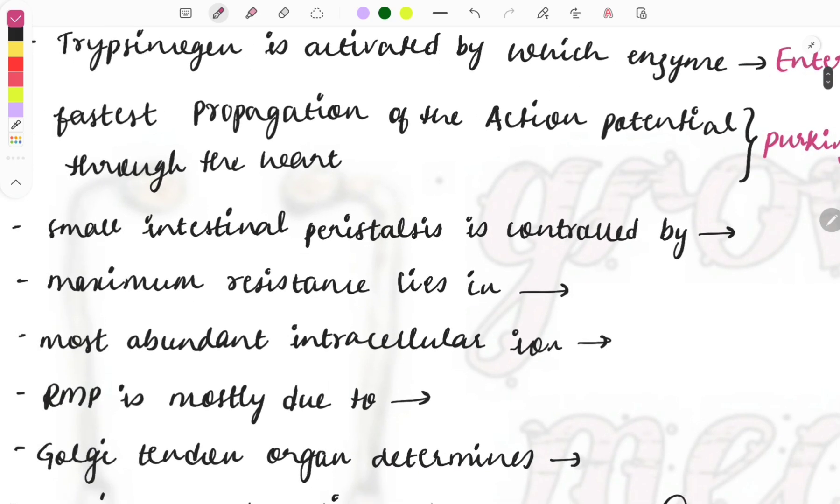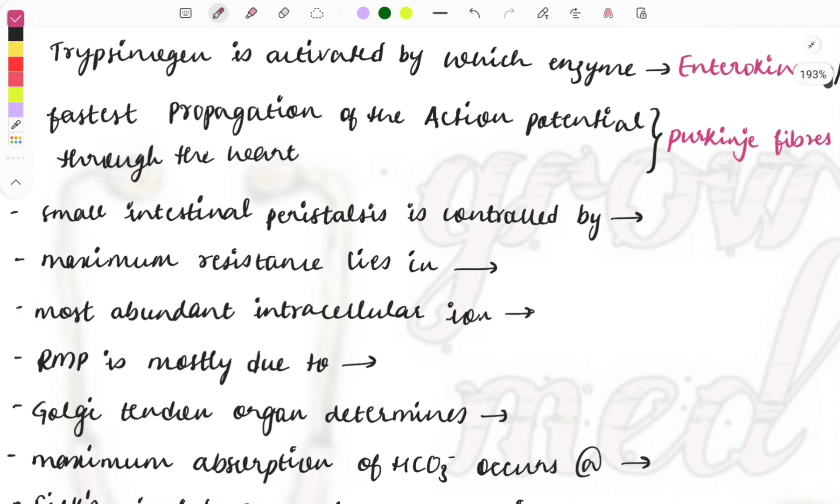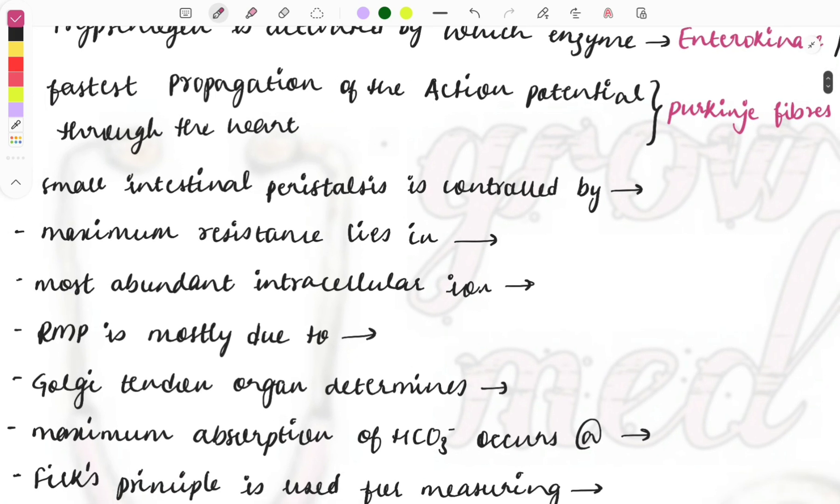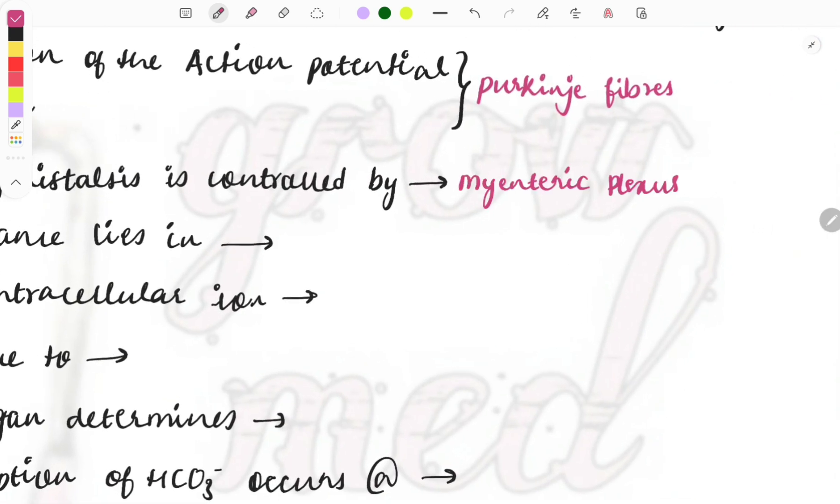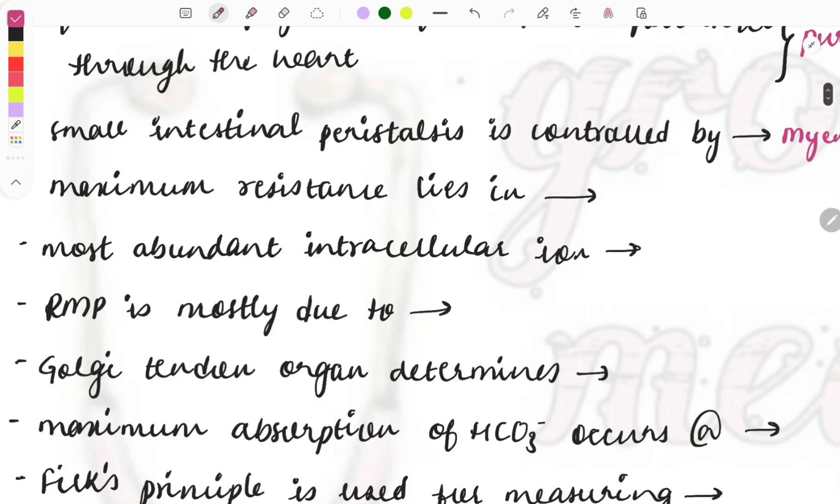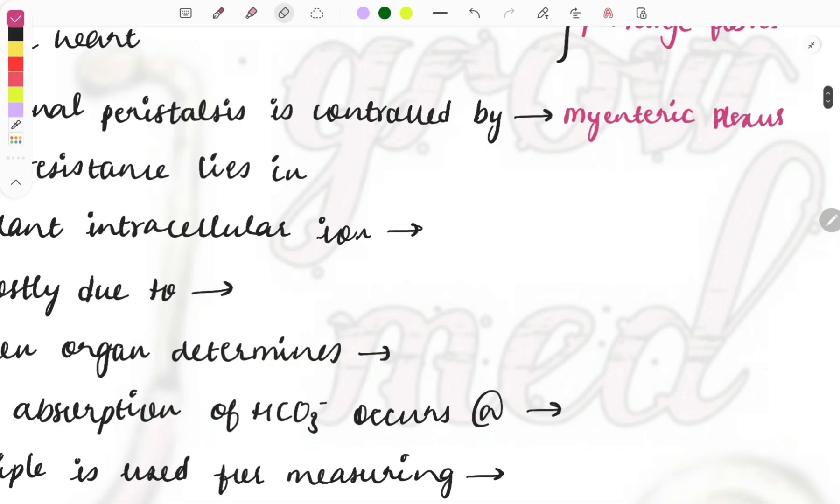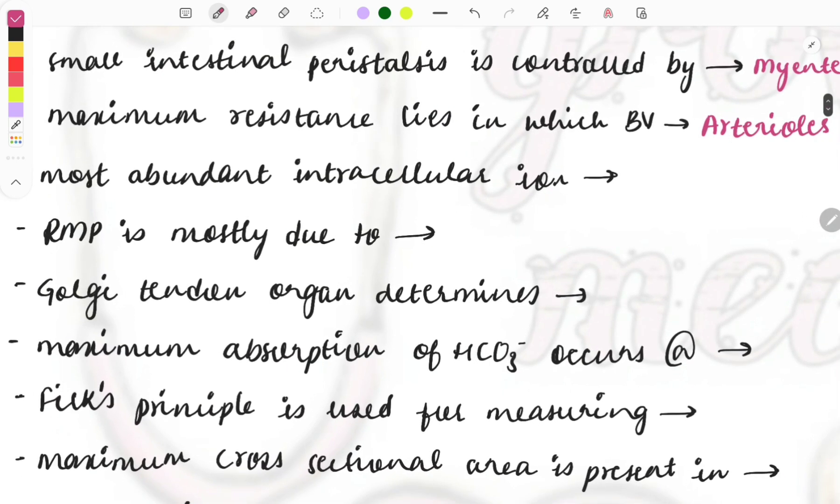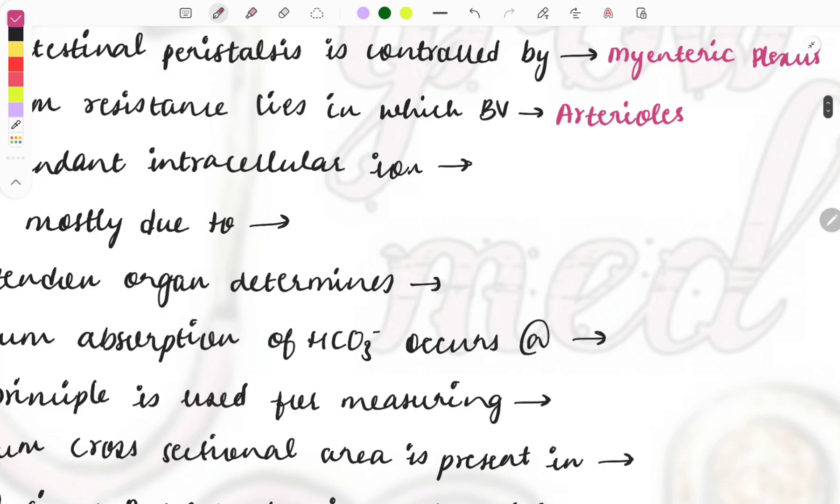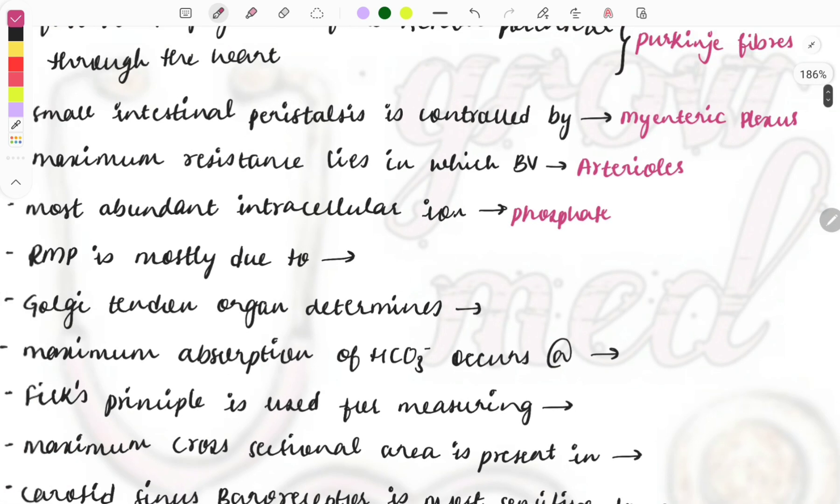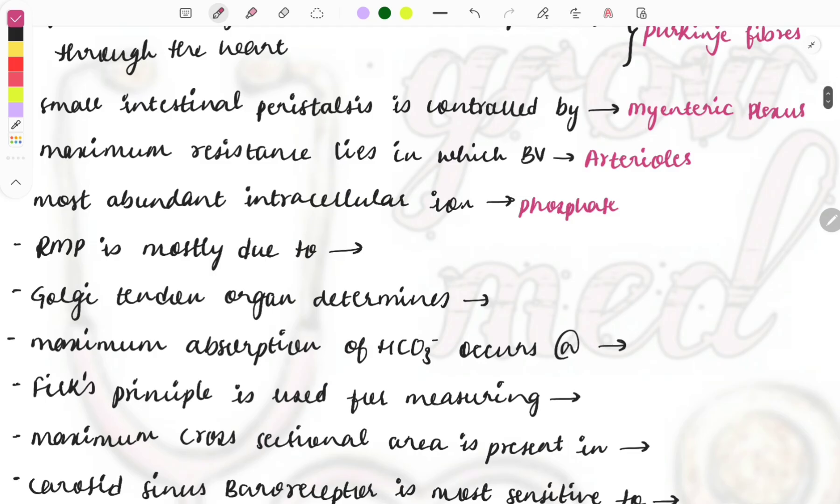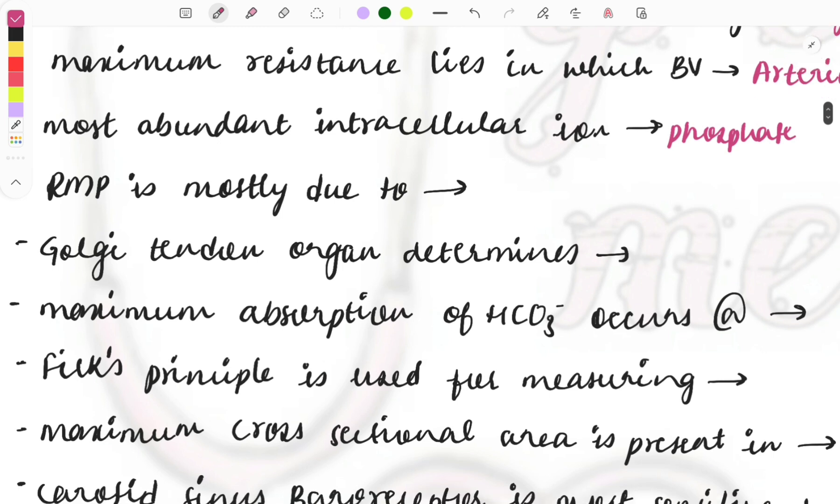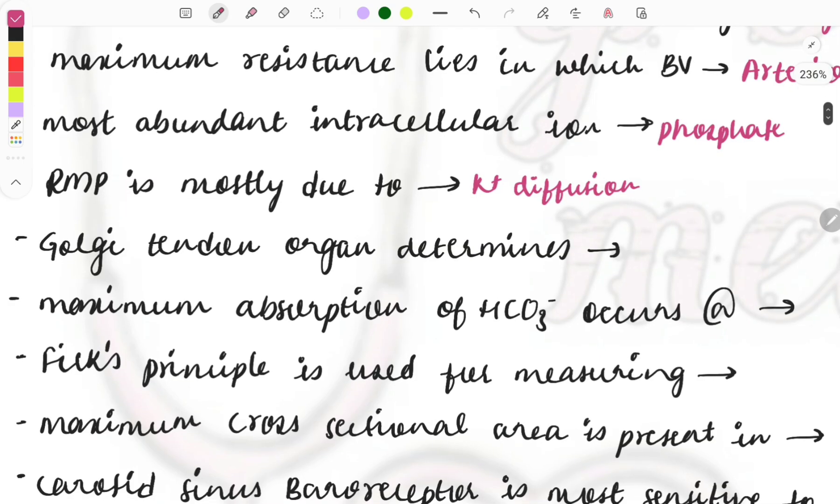So fastest flow of the current occurs in the Purkinje fibers. Then small intestine peristalsis is controlled by which plexus? So it is the myenteric plexus. Then moving on to the next question, maximum resistance lies in which blood vessel? So it is the arterioles. Then the next question, most abundant intracellular ion is the phosphate. Noted down, it's not the potassium, it is the phosphate which is the most abundant intracellular ion. Then resting membrane potential, this is a part of the action potential, and the resting membrane potential is mostly due to the potassium diffusion.